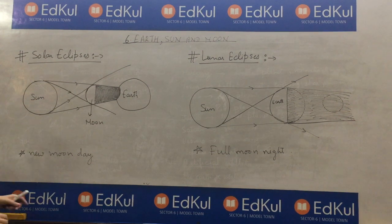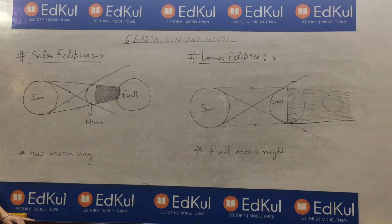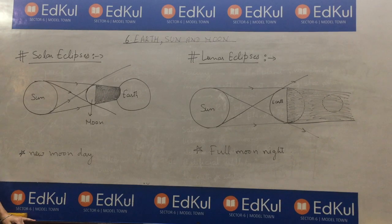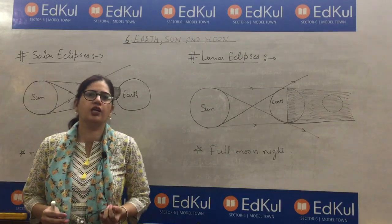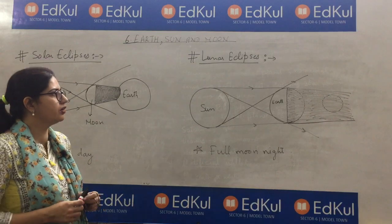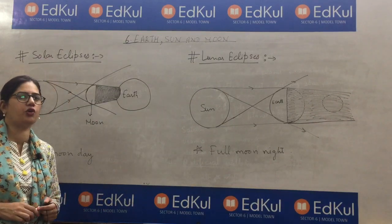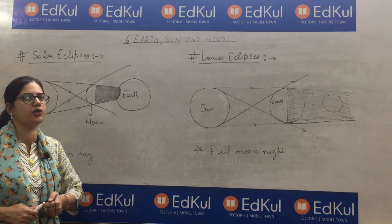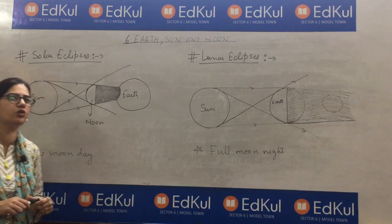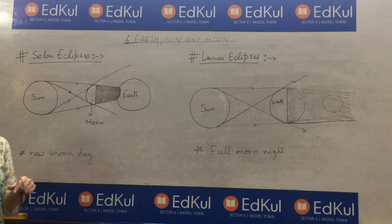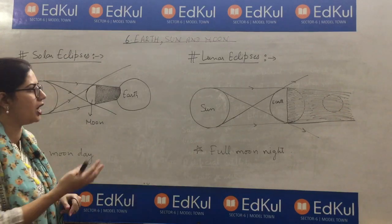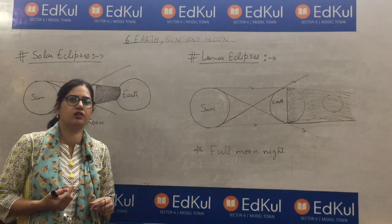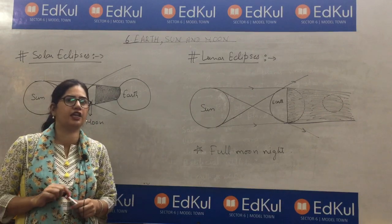Hello students, we will continue with the same chapter, chapter number 6, and the topic is Eclipse. As we all know, the moon rotates around the earth and it rotates on its own axis. Same with earth — earth rotates around the sun and it rotates on its own axis. So, when either the moon comes in between earth and sun, or earth comes in between moon and sun, the eclipse takes place.